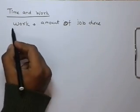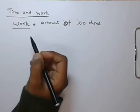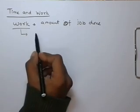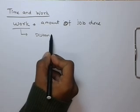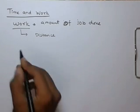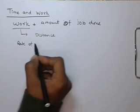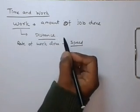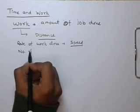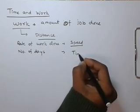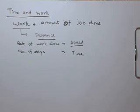We can link work with the time, speed, and distance problem also. Work can be measured in terms of distance — like how much distance is covered by a car. So that distance covered by a car is actually the work done by a car. The rate of work done is actually speed, and the number of days or amount of time required to do the work is time. So we can break the problem of time and work into the problem of distance, speed, and time.